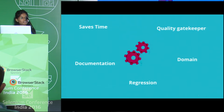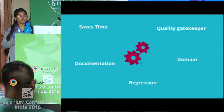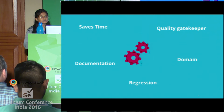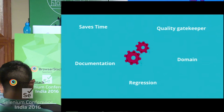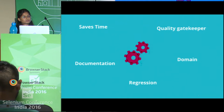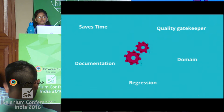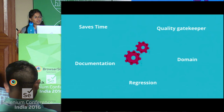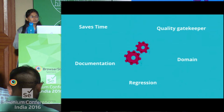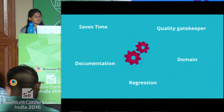So those are the advantages of writing functional tests. Whenever I'm writing any new automation, what things should I keep in mind? Things like: easy to maintain — that's a very important point. Readable. Reliable — it should give the same result when you run it n number of times, it should not be flaky. And code reusability — that's a very important aspect.